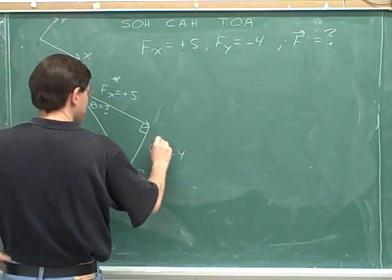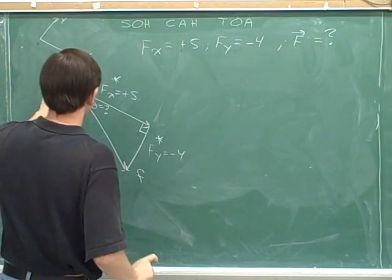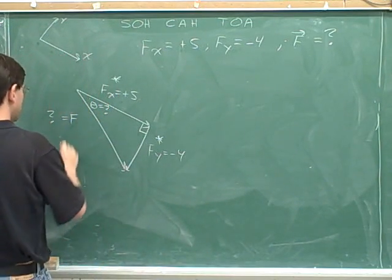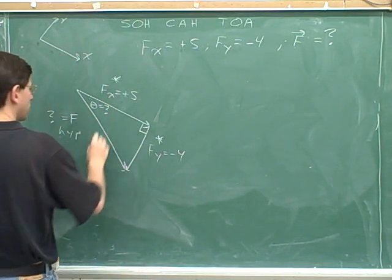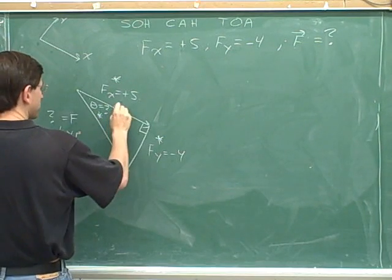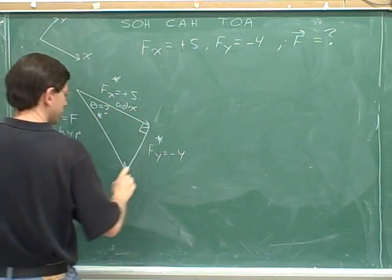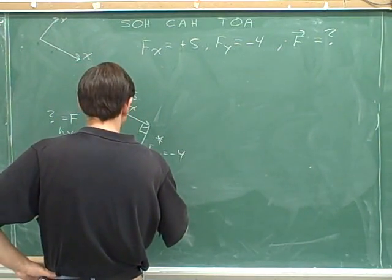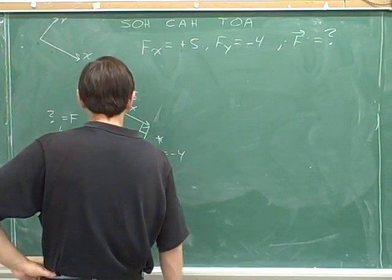Let's asterisk the information we were originally given. I'll asterisk this angle that I'm focusing on, so I see that the x component is adjacent and the y component is opposite.